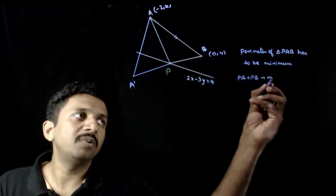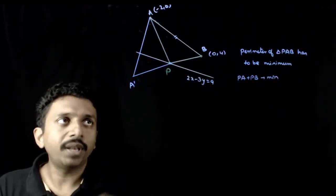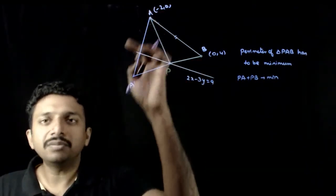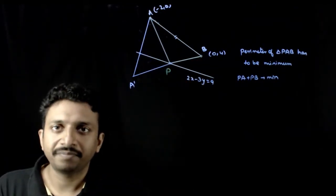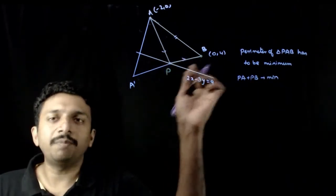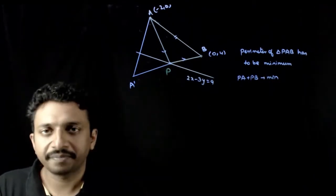PA plus PB has to be minimum, and PA plus PB will be minimum when the line PB on extension passes through the image of A. That is, if the rays PA and PB are incident and reflected rays about this mirror.